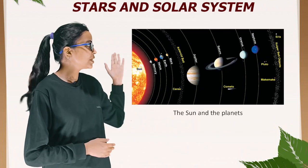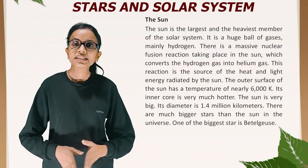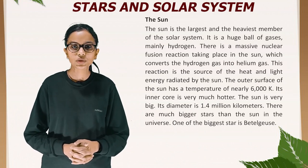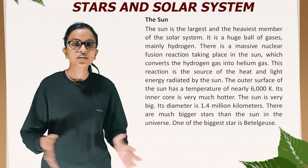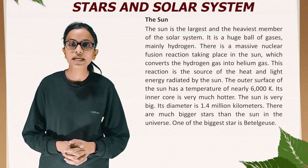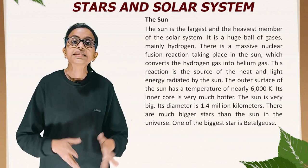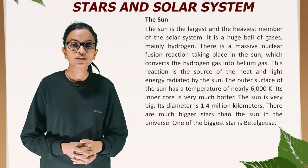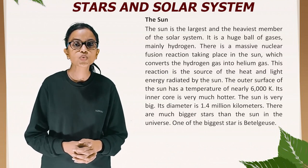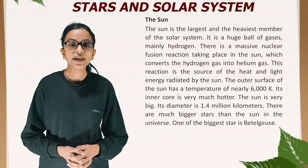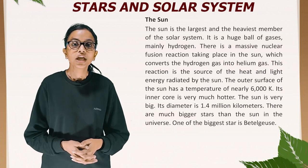The Sun is the largest and heaviest member of the solar system. It is a huge ball of gases, mainly hydrogen. A massive nuclear fusion reaction takes place in the Sun which converts hydrogen gas into helium gas — this reaction is the source of the heat and light energy radiated by the Sun. The outer surface of the Sun has a temperature of nearly 6000 K, and its inner core is much hotter. The Sun's diameter is 1.4 million kilometers. There are much bigger stars than the Sun in the universe; one of the biggest is Betelgeuse.